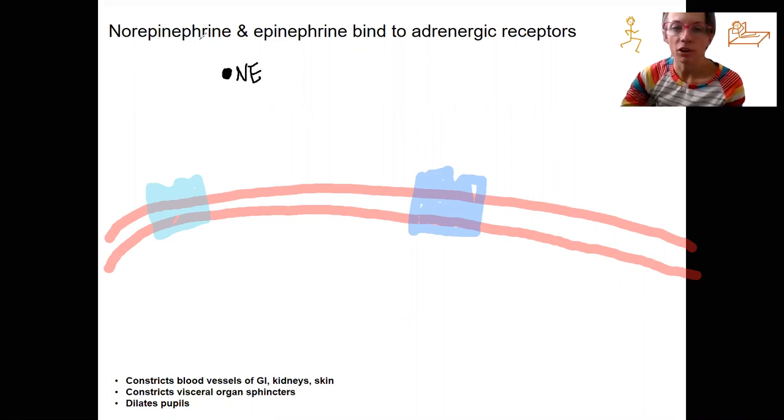Norepinephrine and epinephrine are the two neurotransmitters. They also can act as hormones if they're circulating in the bloodstream. They're chemical messengers, let's call them, that bind to adrenergic receptors. Adrenergic receptors are receptors that bind to norepinephrine and epinephrine.